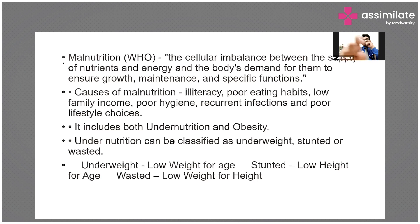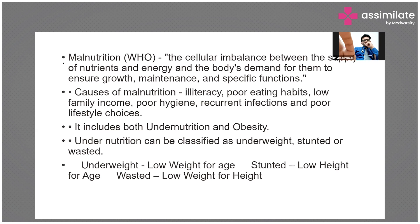Malnutrition includes both undernutrition and obesity. Malnutrition doesn't mean just a very thin person. Undernutrition can be classified as underweight, stunted, or wasted. Underweight means weight is less than minus two standard deviations for the particular age and sex. Stunted means growth is affected — bone growth is impaired. Wasted means a loss of muscle mass. Underweight may also refer to low weight for height.